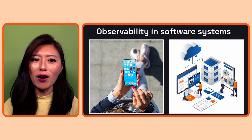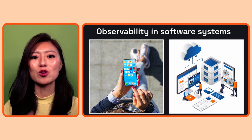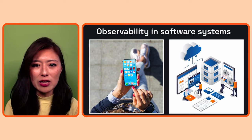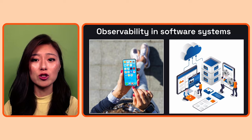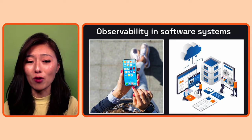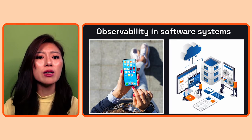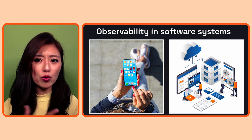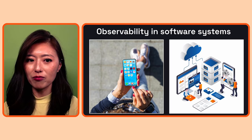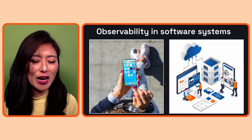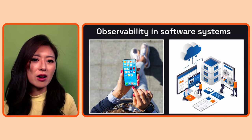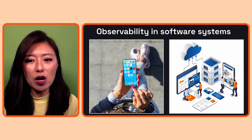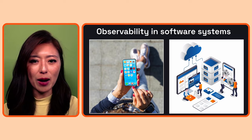We can apply the same analogy to observability in software systems. When I say software systems, I'm referring to an application or an infrastructure that runs the application. Our goal is to observe what's going on within our system so we're aware when something's off, get context about what's happening and where, so we can get the right teams to fix the problem and come up with a plan to prevent it in the future.